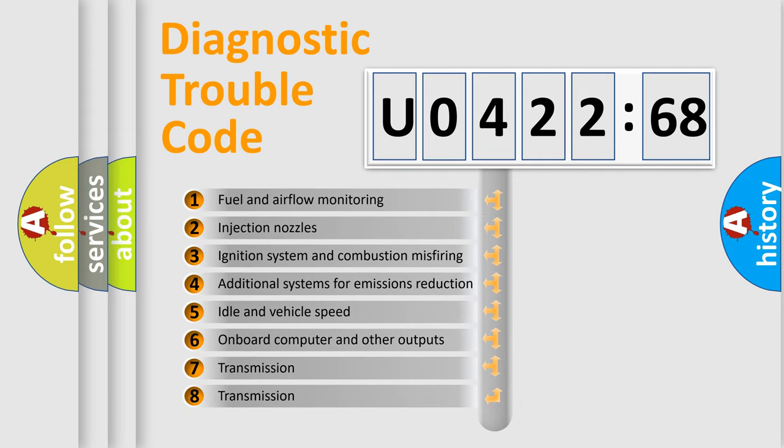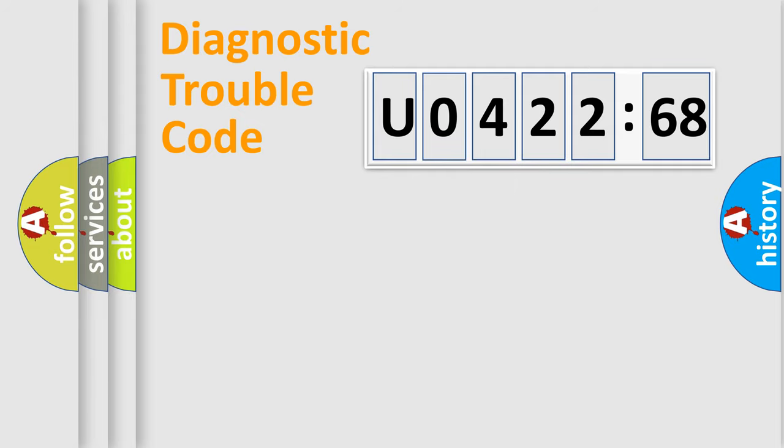The third character specifies a subset of errors. The distribution shown is valid only for the standardized DTC code. Only the last two characters define the specific fault of the group.